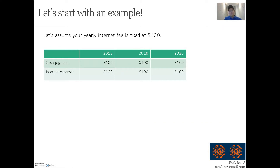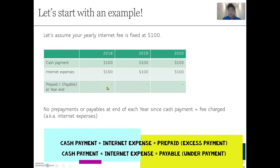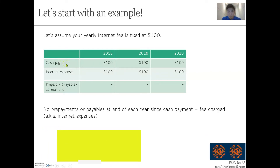Let's start with an example. Assume that you have an internet yearly fee to pay and you sign up with your internet provider and they say $100 a year. If your cash payment and your internet expense are the same, at the end of each year the prepaid or payables portion will be zero, because your cash equals the fee. The internet expense goes to the income statement and cash payment is reduced from cash at bank. Very straightforward.